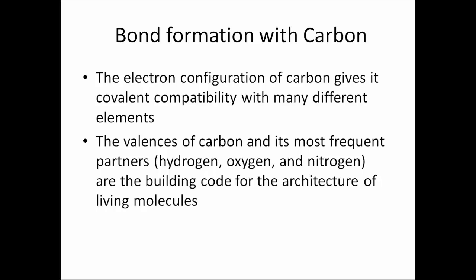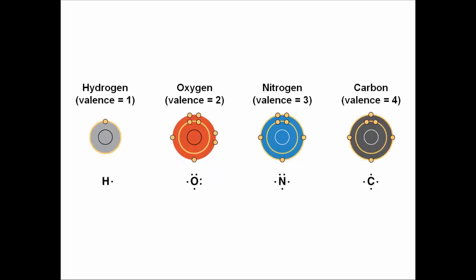Because of this electron configuration, the covalent compatibility is pretty diverse. The most frequent partners in covalent bonds for carbon are hydrogen, oxygen, and nitrogen — and these are actually the building blocks of living molecules. Hydrogen has a valency of one, oxygen a valency of two, nitrogen a valency of three, and carbon a valency of four. You can see how they increase from one to four in complexity and how they are very well matched to bond with carbon.